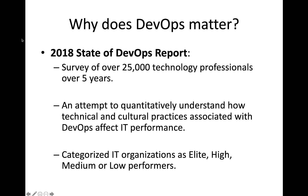People were talking about implementing practices to improve service delivery and providing anecdotal evidence of how it was working in their organization. But the question was, from a broader global perspective, is there a way to clearly identify what practices are improving IT performance? This study categorized IT organizations into essentially four different tiers: elite, high, medium, and low performers.